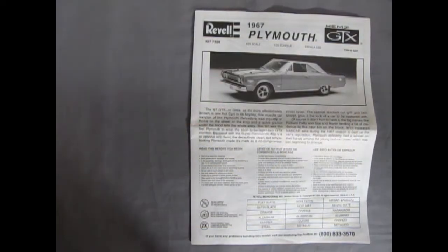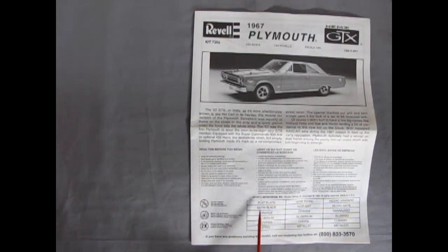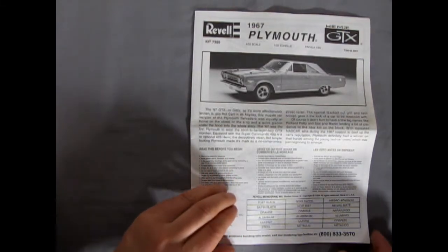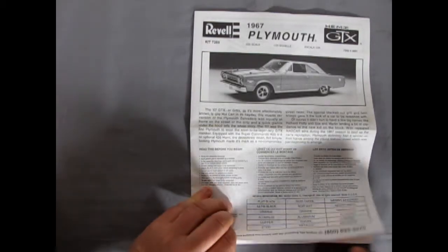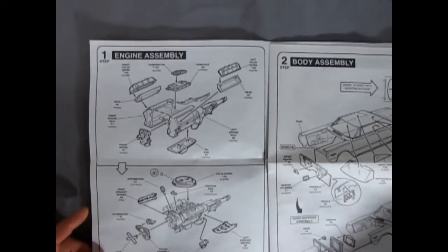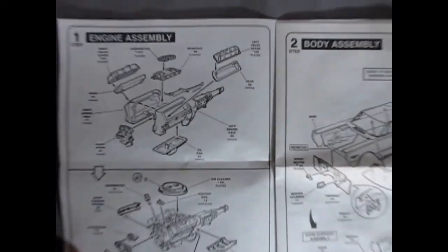And here's our Plymouth instruction sheet. And again it's got a photograph of the built up model, as well as the history of it. And then down here it's got all the color call outs. Flat black, satin black, orange, aluminum, copper and steel. And of course our infamous read this before you begin. So now let's just open this up. Of course it opens like the book. The pictures are quite large on this one. So it's going to be nice to zoom in just a little.